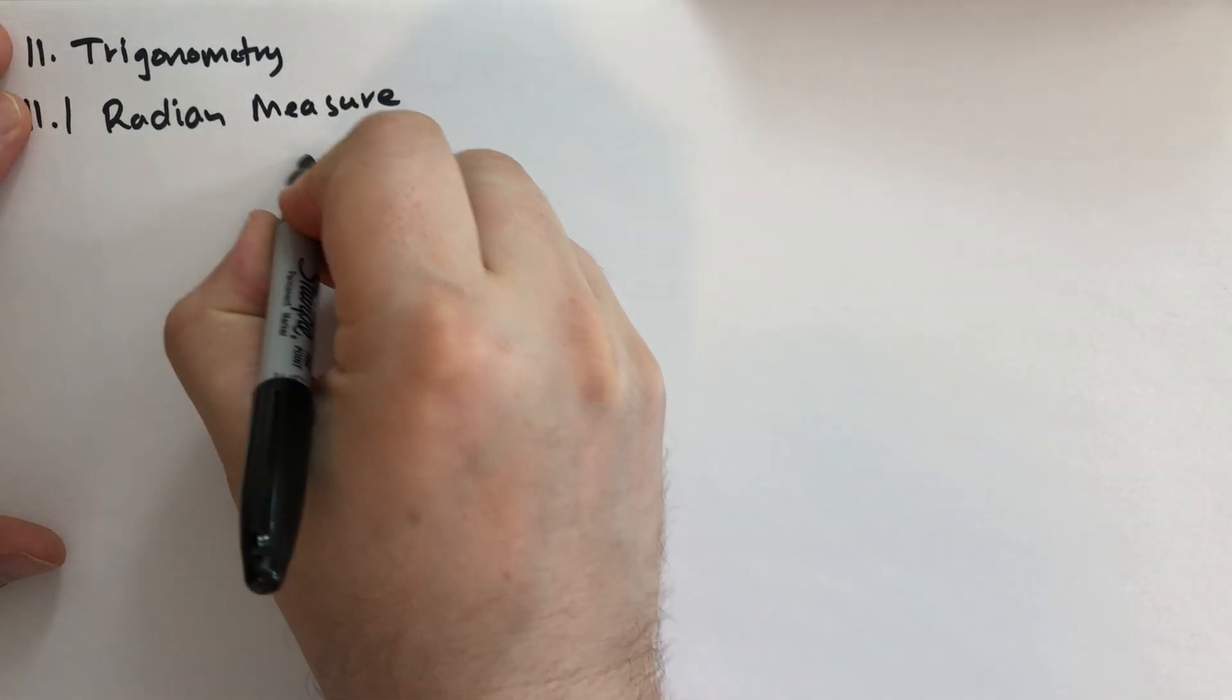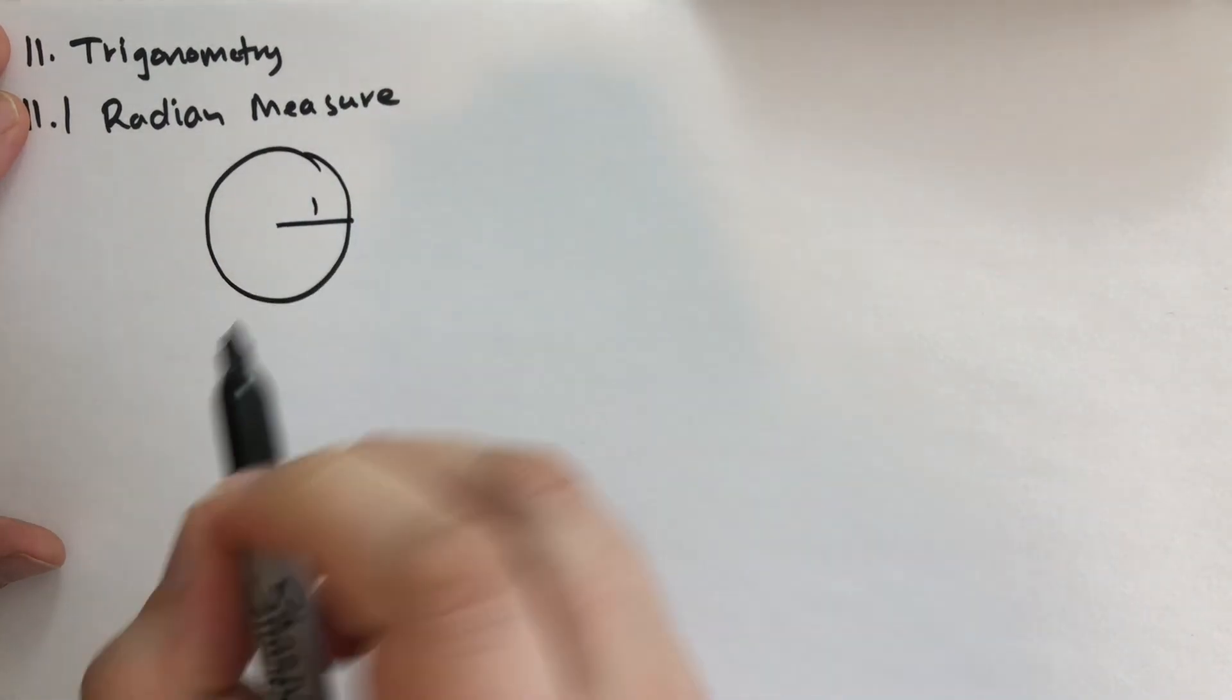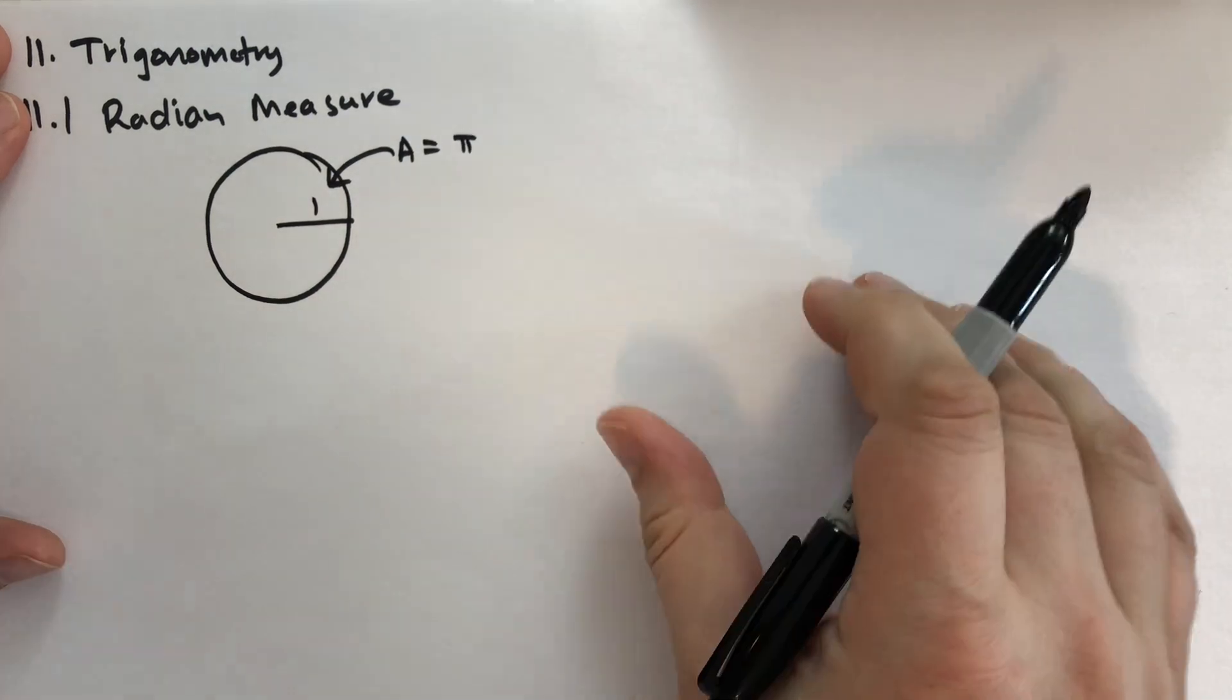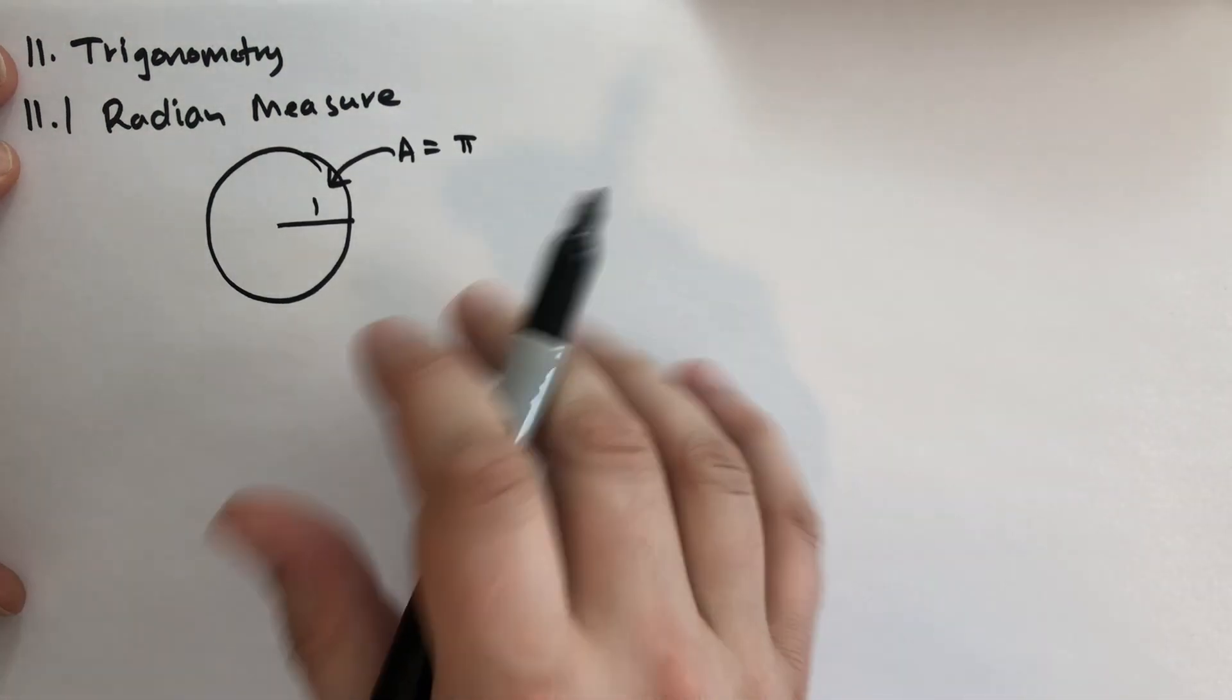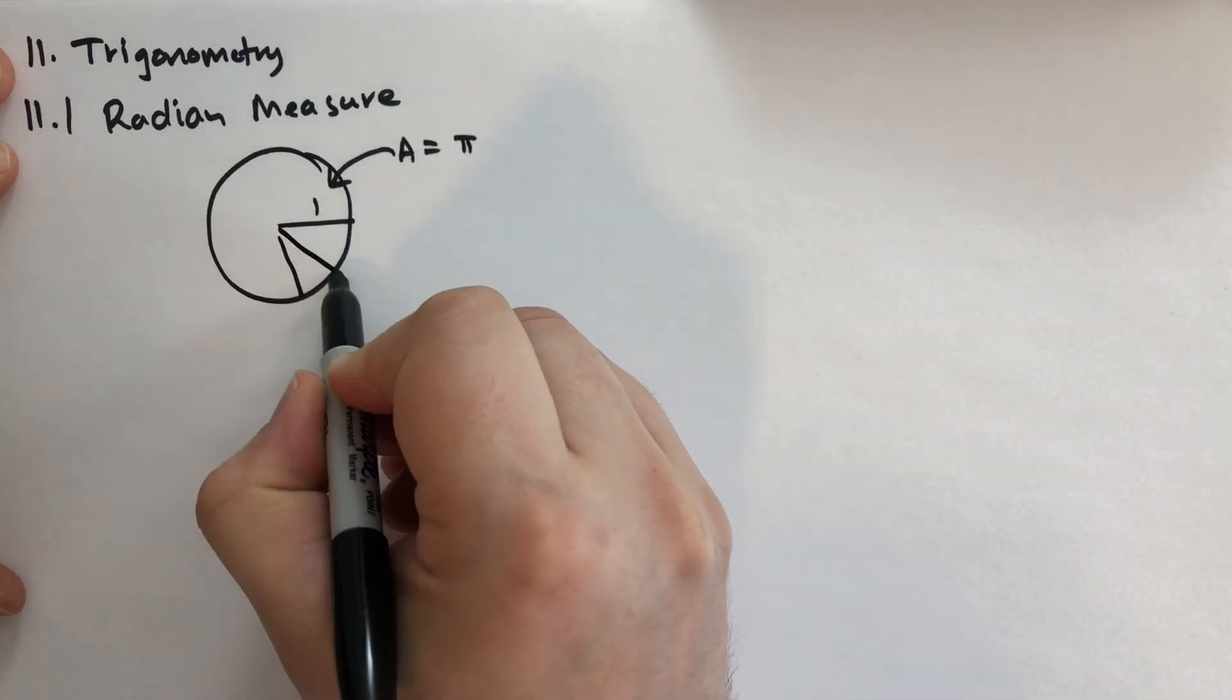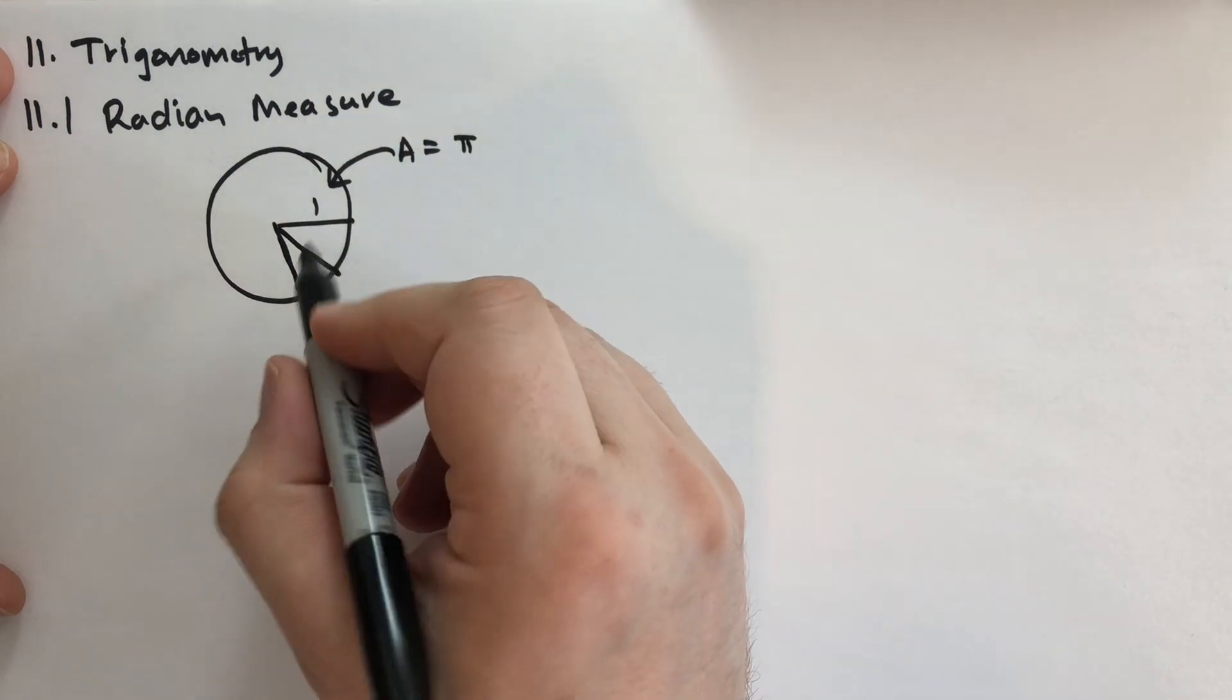And so we're going to use the area of a unit disc. So if we have a disc with a radius of one, then the area of that disc is equal to pi. So that's where radian measures come from. And we can measure an angle inside of this disc by comparing the area of the slice of pi that the angle covers.